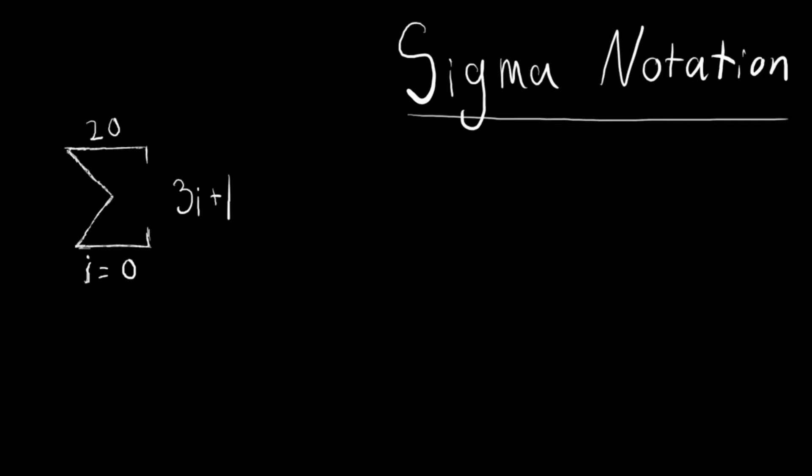So let's break this down. In the middle here, we have a sigma, a big sigma. That's why it's called sigma notation.